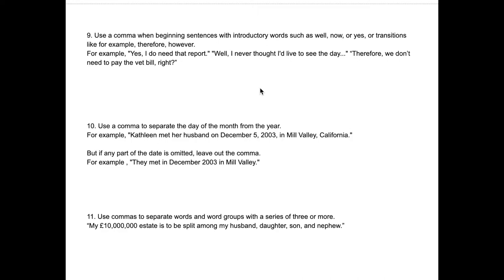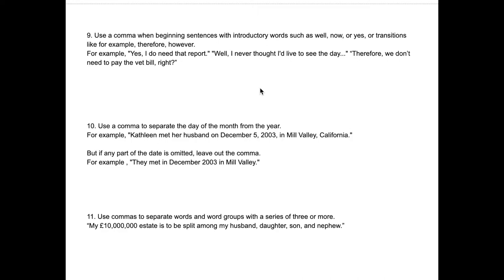Rule nine is also simple. We add a comma at the beginning of a sentence whenever we start off with a word like "well," "now," or "yes," and also with transition words like "therefore," "for example," or "however." Examples: "Yes, I do need that report." "Well, I never thought I'd live to see the day." "Therefore, we don't need to pay the vet bill, right?" — and note the comma before "right?" because there's a shift to a question.